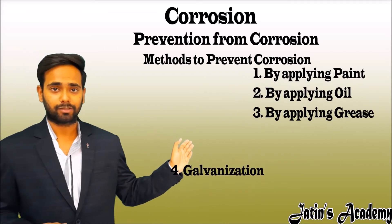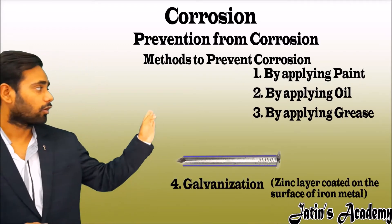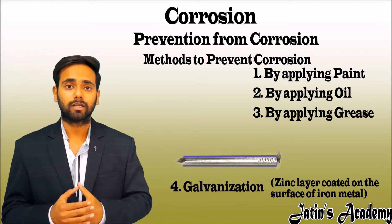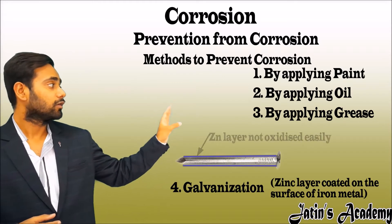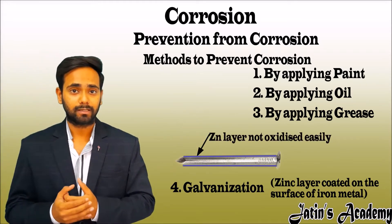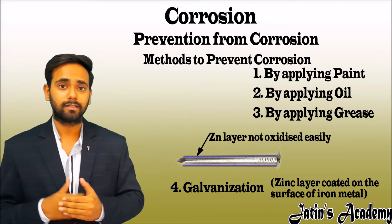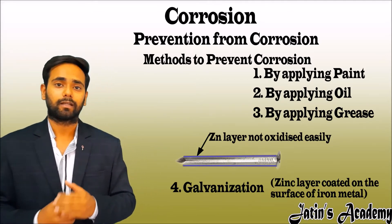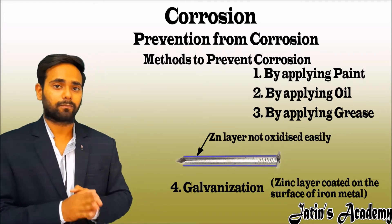What is galvanization? A zinc layer is coated on the surface of the iron metal. Why do we put the zinc layer on the iron metal? Because the zinc layer does not oxidize easily. This means the inner iron will also not oxidize easily. So it prevents the corrosion of the iron piece and the iron piece is protected from damage.